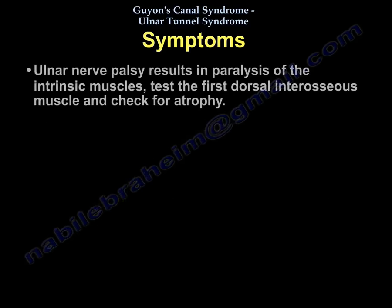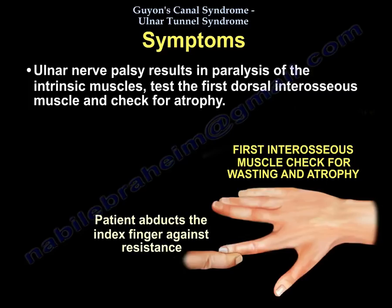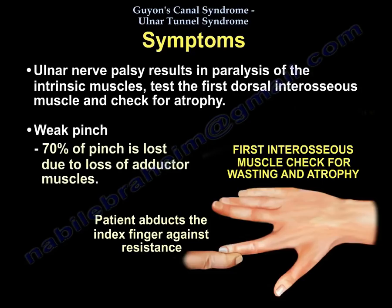Ulnar nerve palsy results in paralysis of the intrinsic muscles. Test the first dorsal interosseous muscle and check for atrophy and wasting. The patient can be seen trying to abduct the finger against resistance. The patient may also have weak pinch — 70% of pinch strength is lost due to loss of the adductor pollicis muscle.